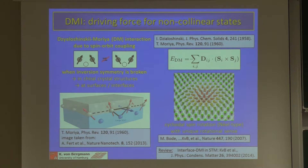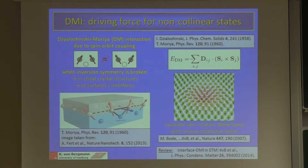As you know, the Dzyaloshinskii-Moriya interaction, or DMI, which is due to spin-orbit coupling, is responsible for the canting between the spins and introduces twists in the magnetic texture. This DMI can occur when the inversion symmetry is broken, for example in chiral crystal structures or at any surface or interface.